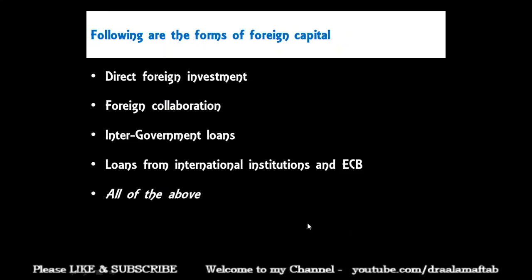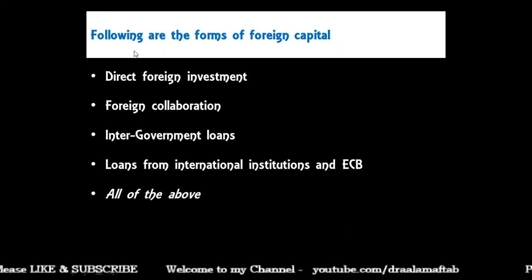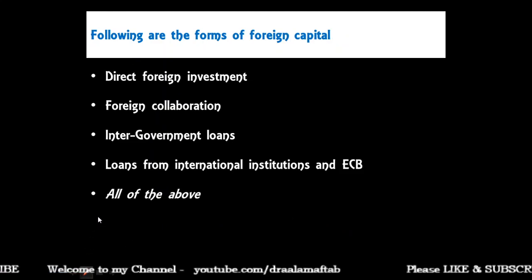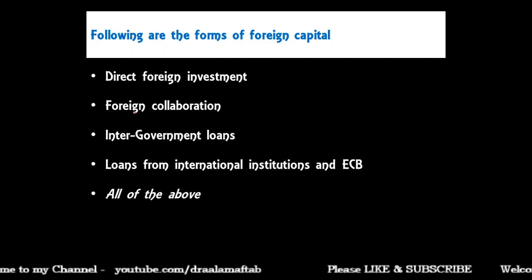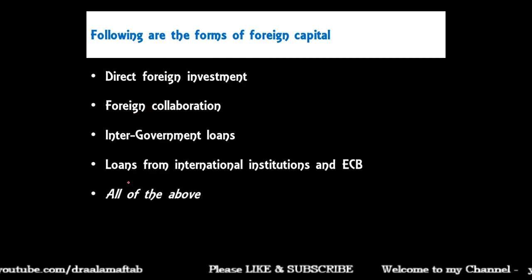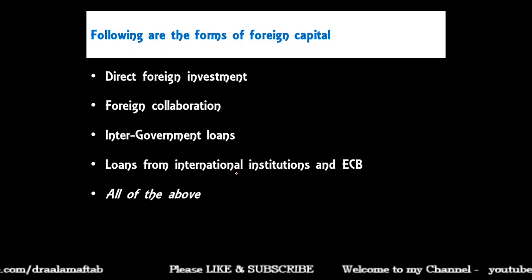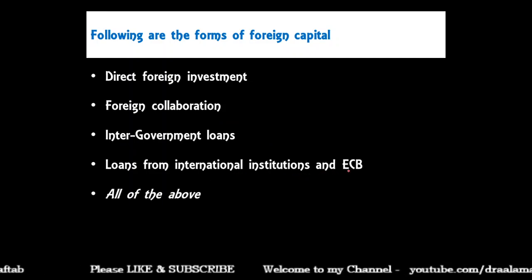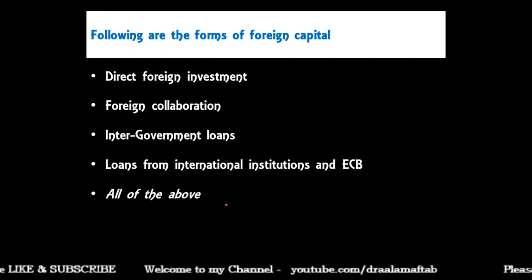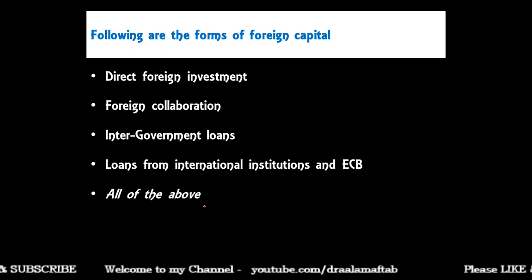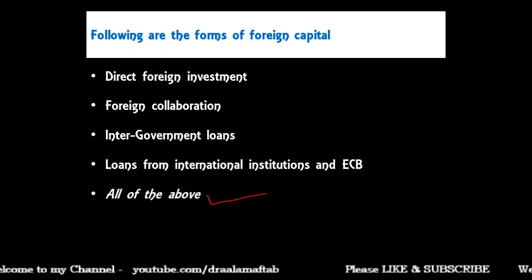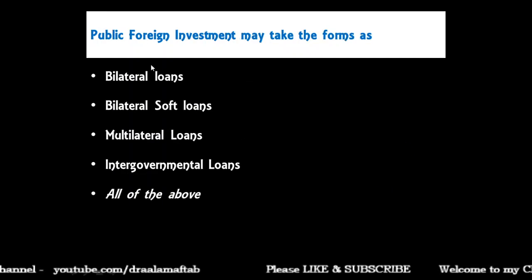Next question: following are the forms of foreign capital — direct foreign investment, foreign collaboration, inter-government loans, loans from international institutions, and external commercial borrowing (ECB), or all of the above? The correct answer is all of the above. All five are forms of foreign capital.